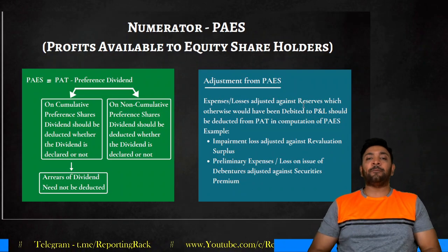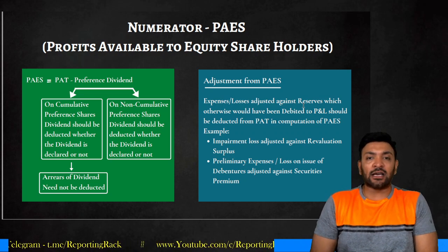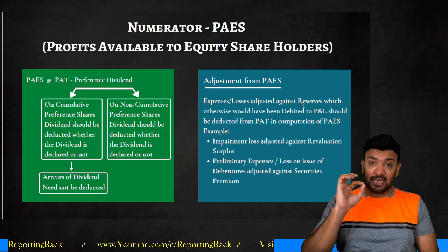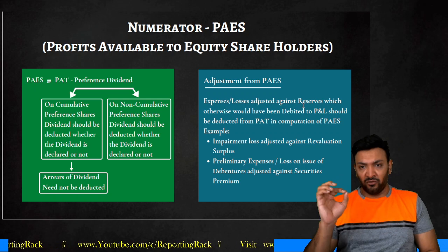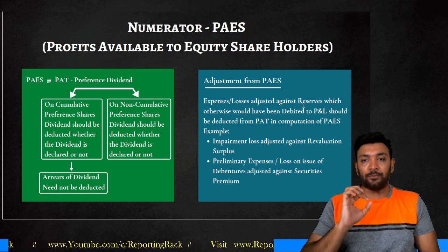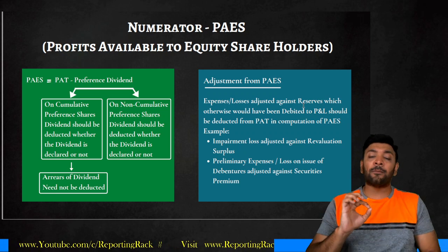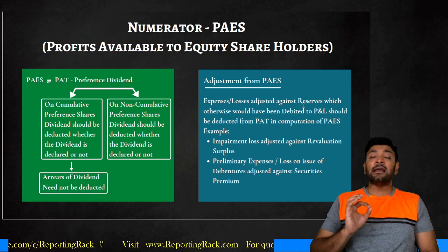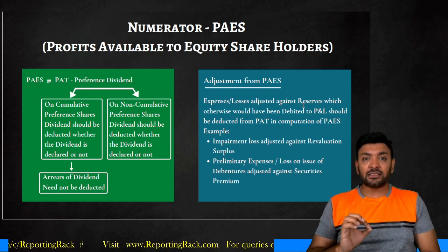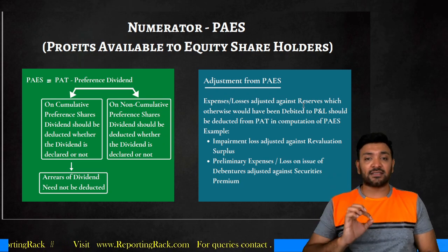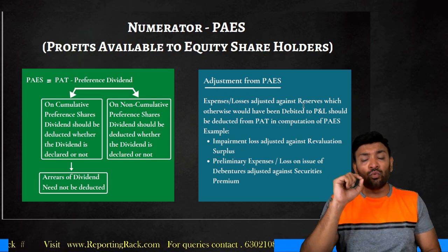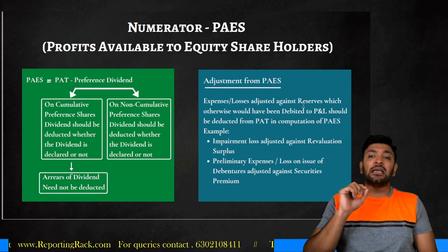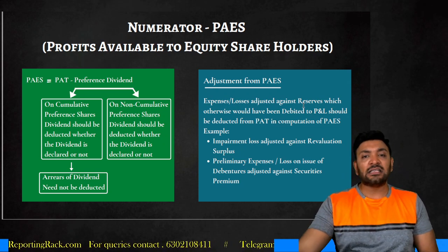The last adjustment in PAS: expenses and losses adjusted against reserves, which otherwise would have been debited to P&L, should be deducted from profit after tax in computation of PAS. For example, if profit after tax is 100 and there are preliminary expenses of 5, those expenses could either be written off to P&L or adjusted against securities premium.